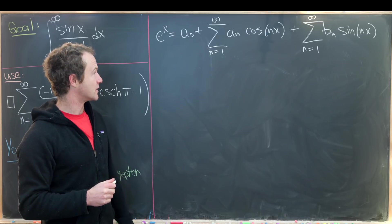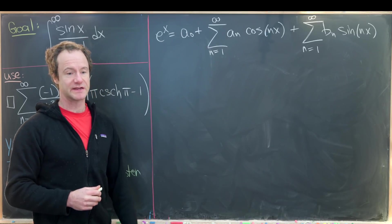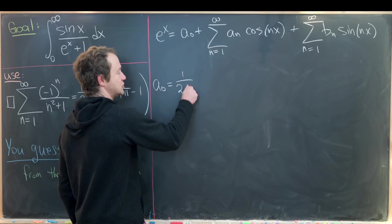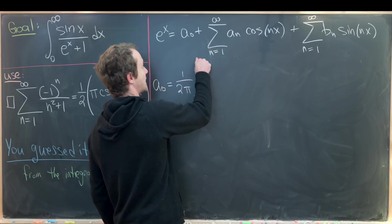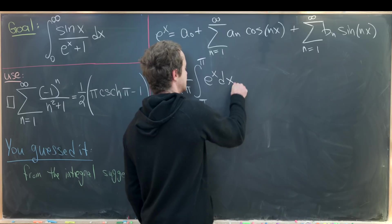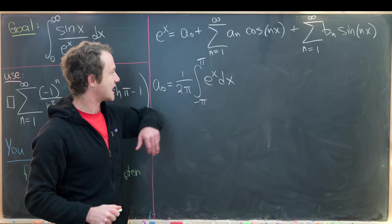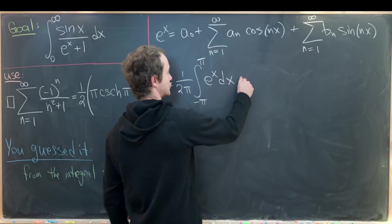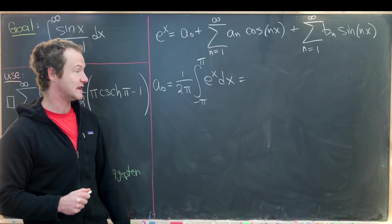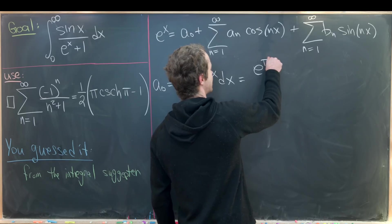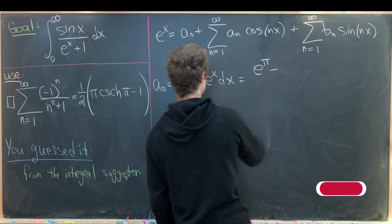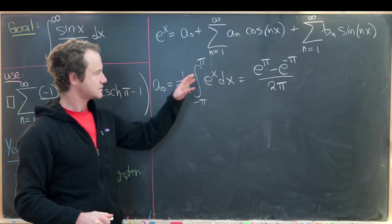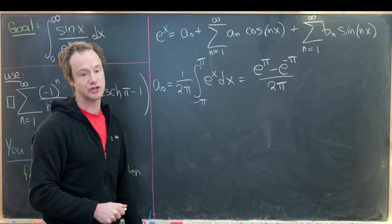From standard results involving Fourier series, we can calculate these coefficients by computing certain definite integrals. So a₀ can be calculated by 1 over 2π times the integral from minus π up to π of e to the x dx. This is straightforward since the antiderivative of e to the x is just e to the x, giving us e to the π minus e to the minus π over 2π.